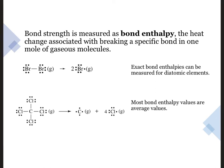While the exact bond enthalpies can be measured for diatomic elements, most bond enthalpy values are average values obtained from measurements from many different molecules containing a specific bond. For example, we could measure the strength of the carbon chlorine bonds in tetrachloromethane,